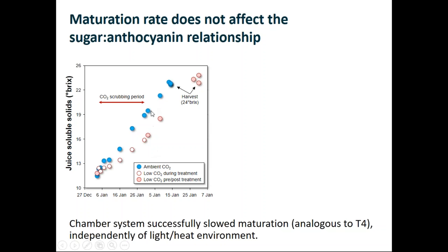At the end of the scrubbing period those vines got normal CO2 again, and they then have the same rate of accumulation as the vines that were never affected by that CO2 scrubbing - but because they're behind at that period they take longer to ripen, eventually ripening to the same point and then being harvested. So as we saw in the T4 treatment in the field, we have a longer maturation period and a slower rate of ripening with this CO2 scrubbing, simulating that field impact quite well.